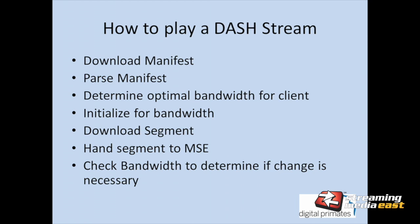We download the segments and hand them to the player — via Media Source Extensions for the JavaScript version, or via platform-specific APIs for Android, Flash, connected TVs, etc. Each time we download files, we collect metrics to decide if this is the proper bitrate for this end user. If we're already at the top bitrate and have extra bandwidth, we can increase our buffer and download more content so there's less chance of switching down if there's a hiccup.